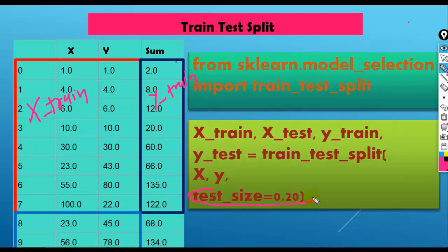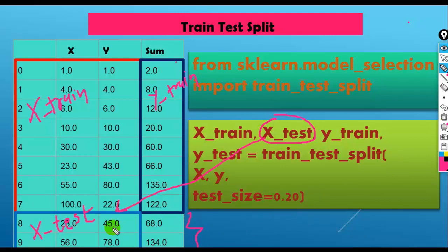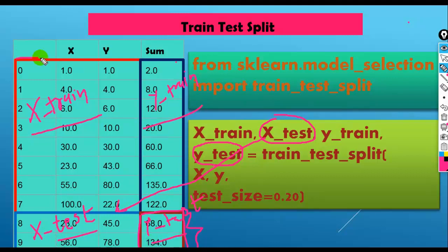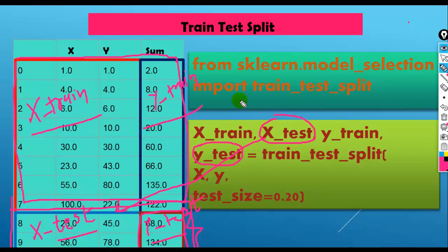We kept aside 20% data for testing purpose. Since we have a total of 10 samples, 20% means 2 samples are kept aside for the testing set. This is our X_test — the independent variables of the testing set — and Y_test — the dependent variables of the testing set. This way, train_test_split divides our data into four parts: X_train, Y_train, X_test, and Y_test.